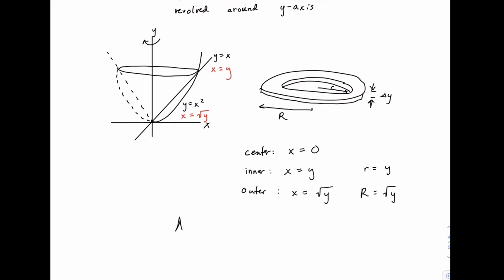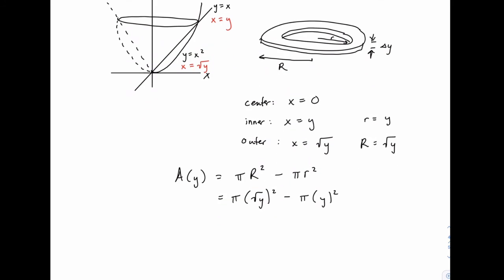So this means that our area function is a function of y, and it's the pi times the outer radius squared, minus pi times the inner radius squared. So that would be pi times the square root of y squared, minus pi times y squared. Or to simplify, we can factor out a pi and write this as y minus y squared.